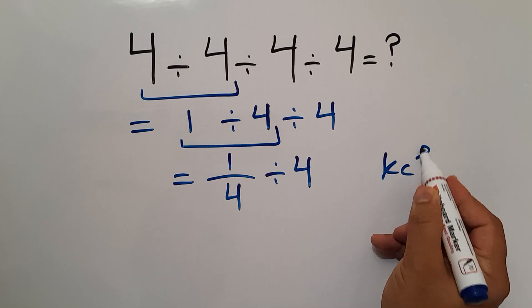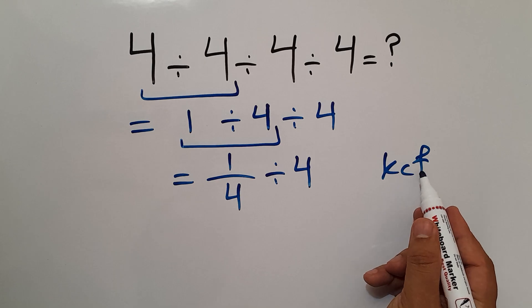Now, according to the KCF rule, K stands for keep, C stands for change, and F stands for flip.